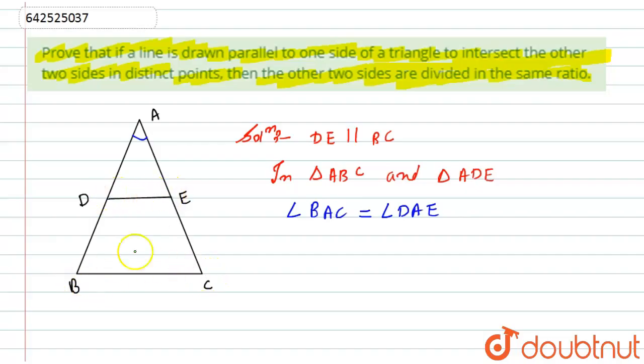Then second one, if DE is parallel to BC, these corresponding angles D and B will be equal. Hence I can say that angle ADE is equal to angle ABC.